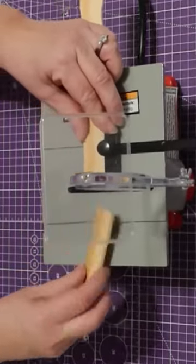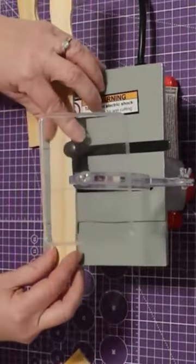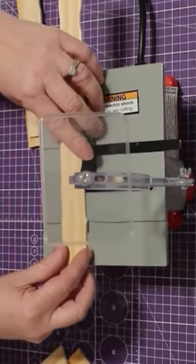I measured how long my stick pieces needed to be to cover the sides of the crates and cut them down using my mini table saw that I got from Harbor Freight.